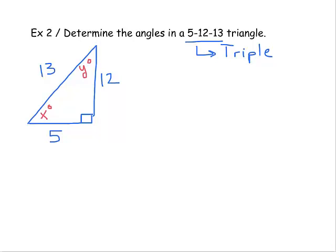This problem has many different ways to solve it. To find missing angle x, let's use the sine ratio, since we have the leg opposite to x, which is 12, and the hypotenuse, which is 13. So the sine of x equals 12 over 13, which is opposite over hypotenuse. That's not the only option — we could also use cosine of x equals 5 over 13, or tangent of x equals 12 over 5.